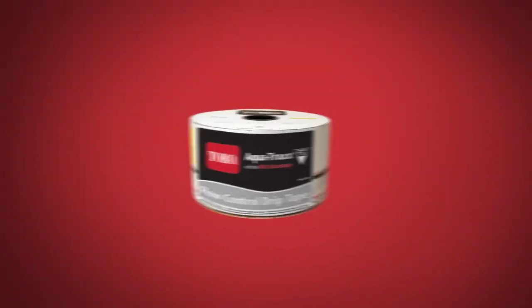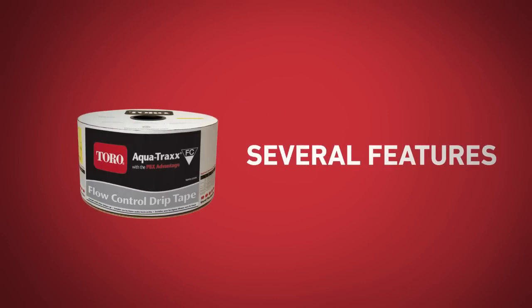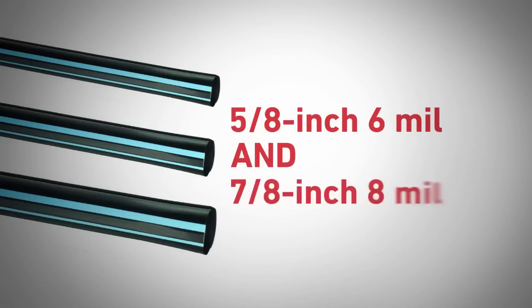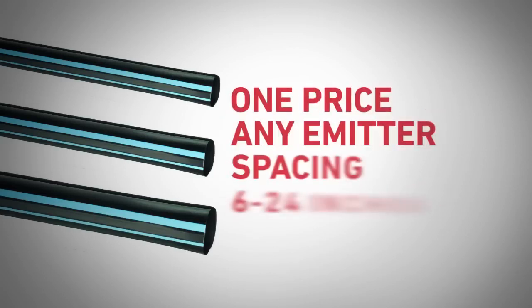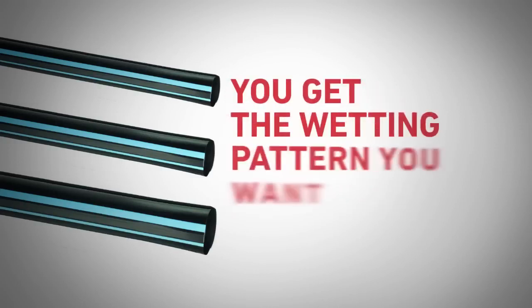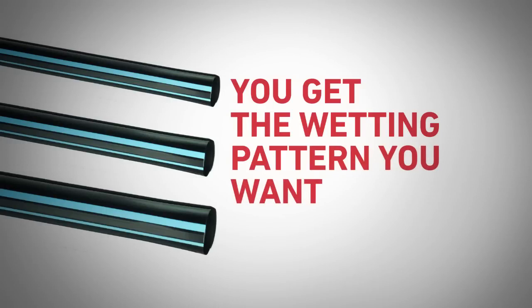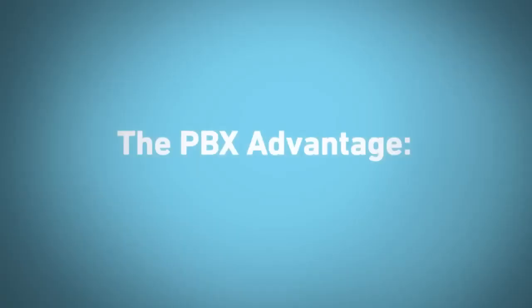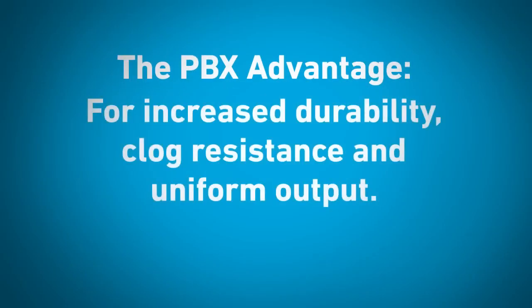AquaTrax FC includes several features so you can find the right drip tape for your needs. Available in 3 diameters and 5 wall thicknesses, including more affordable 5/8 inch 6 mil and 7/8 inch 8 mil. One price for any emitter spacing from 6 to 24 inches. This allows you to get the wetting pattern you want without paying a premium. All flow rates require just 150 mesh filtration. Designed with the PBX Advantage for increased durability, clog resistance and uniform output.